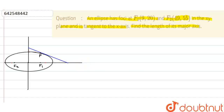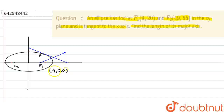Now, if I take the image of F1 with respect to this tangent — that is, the reflection of F1 across the x-axis — the y-coordinate's sign will change. So if F1 is (9, 20), then F1 dash will be (9, −20).